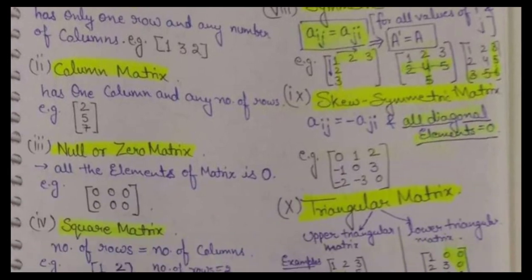Next is skew symmetric matrix. In this case the condition which will be satisfied is aij should be equal to minus aji. So if you take its transpose, it is not exactly the same — the difference is the negative sign. For example, the a12 element which is 1 in this case, and a21 element — which means second row and first column — is minus 1. So aij equals minus aji is the main condition for skew symmetric matrix. Also, all the principal diagonal elements are 0 in this case.